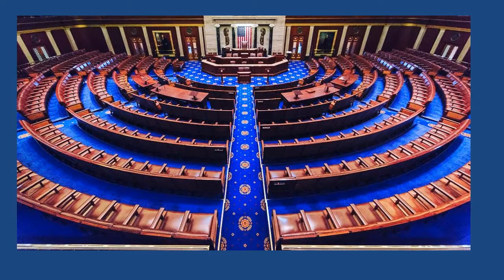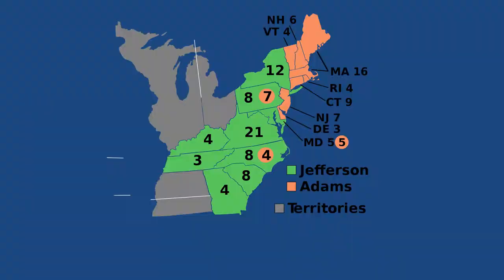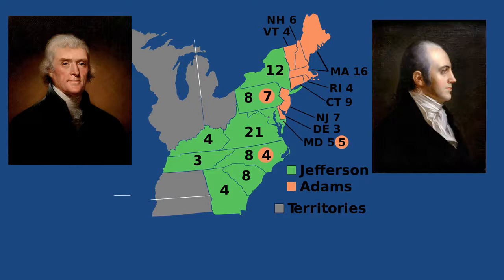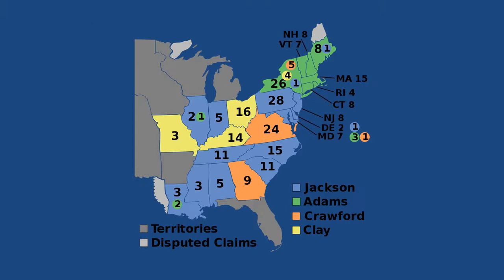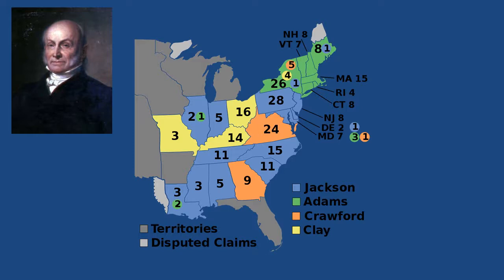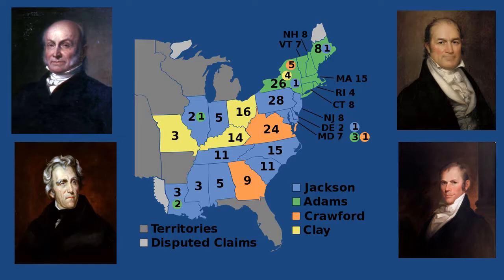This has happened twice before: first in the presidential election of 1800, when the House of Representatives helped break the tie between Thomas Jefferson and Aaron Burr, electing Jefferson president; and second, in the presidential election of 1824, when the House of Representatives elected John Quincy Adams president, after he, Andrew Jackson, William Crawford, and Henry Clay didn't win a majority of the electoral votes.